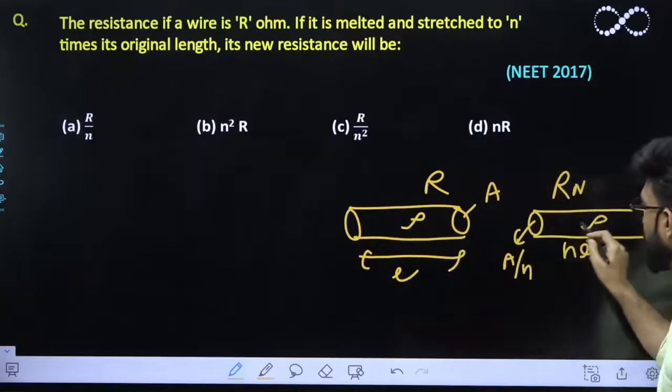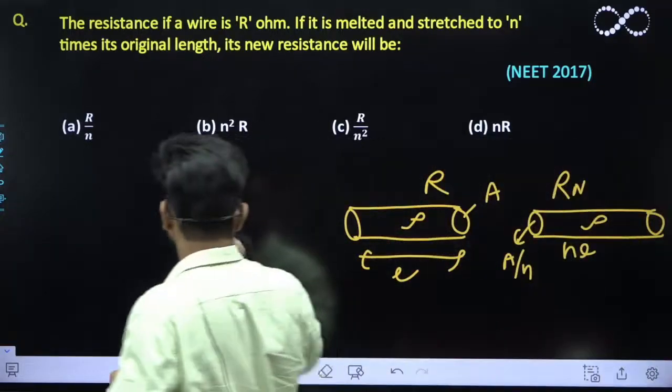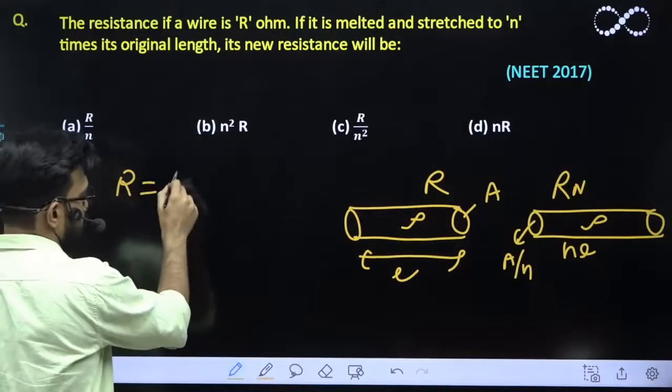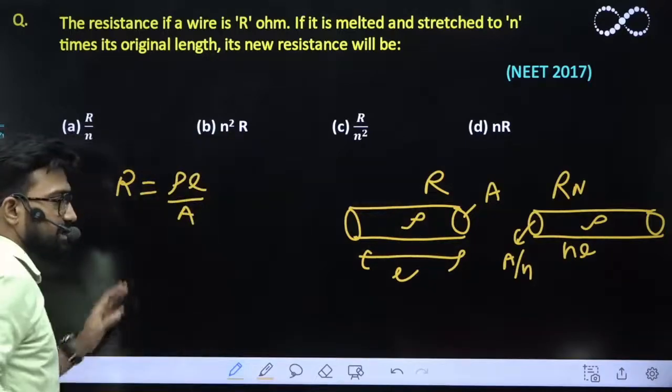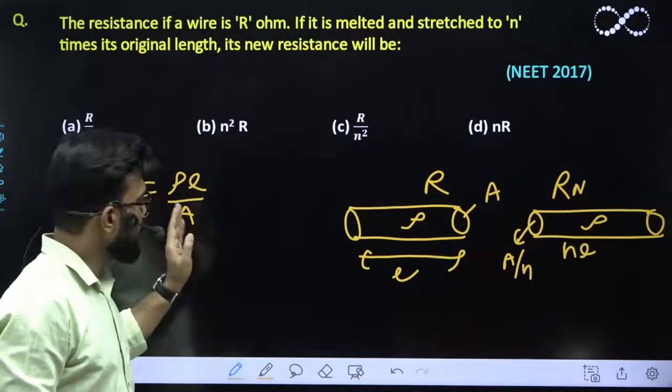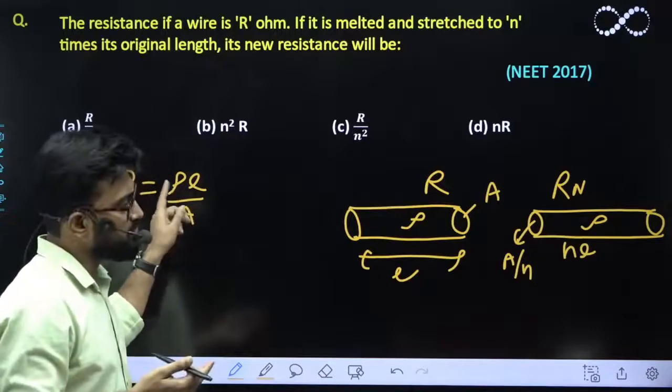Let the resistivity of this material be ρ. Obviously the resistance of this wire R is equal to ρl/a. This is the relationship of resistance, length and area, and ρ is the resistivity of this material.